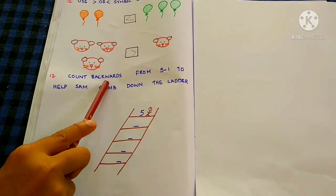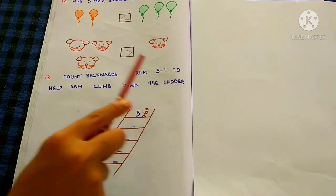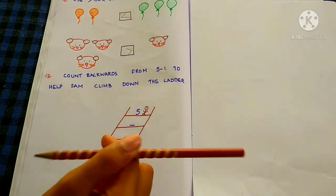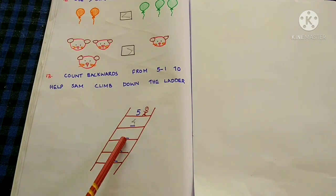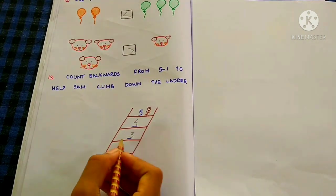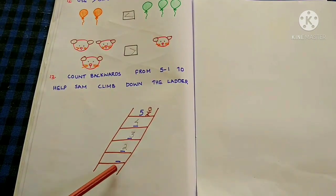Count backwards from 5 to 1 to help Sam climb down the ladder. 5, 4, 3, 2, 1.